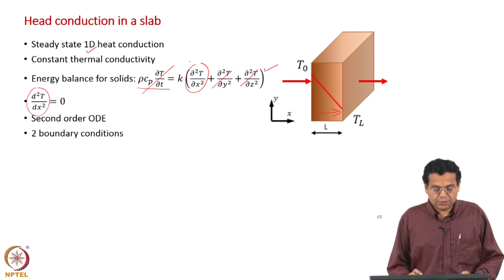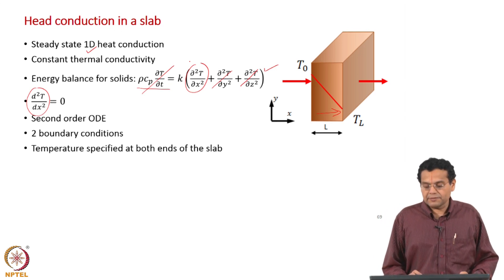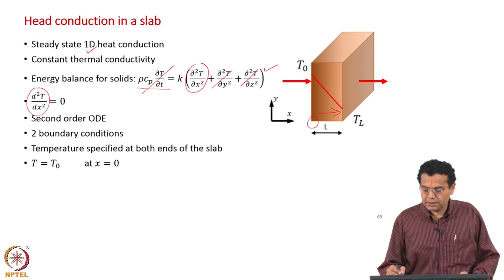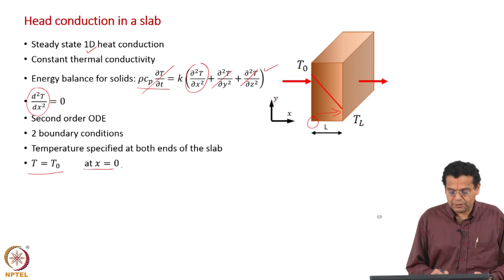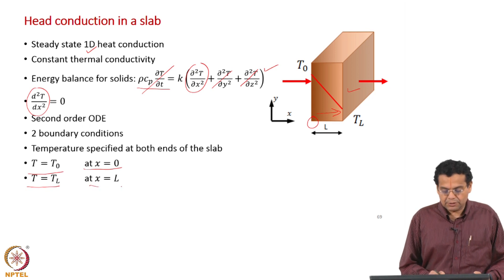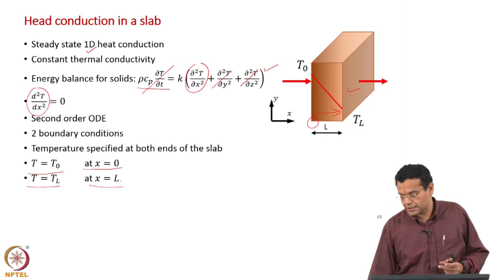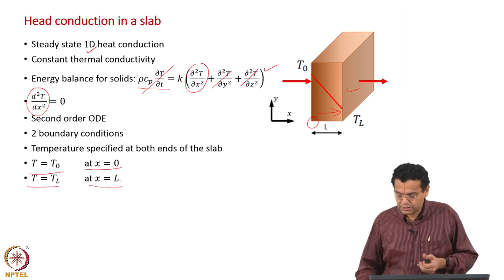We require two boundary conditions to solve this second-order ODE. The temperatures are specified at both ends of the slab: at x = 0, T = T naught (the left surface), and at x = L, T = T_L (the right surface). These serve as the boundary conditions.